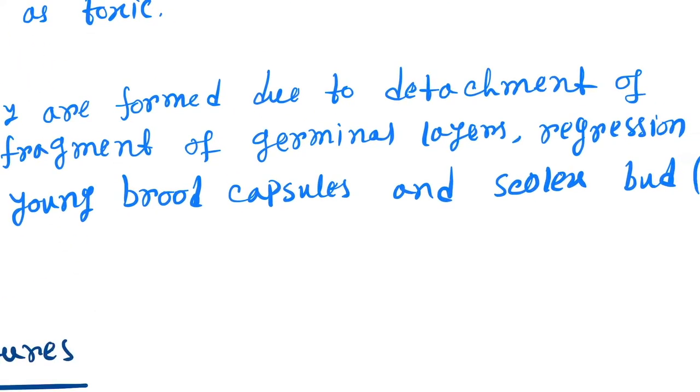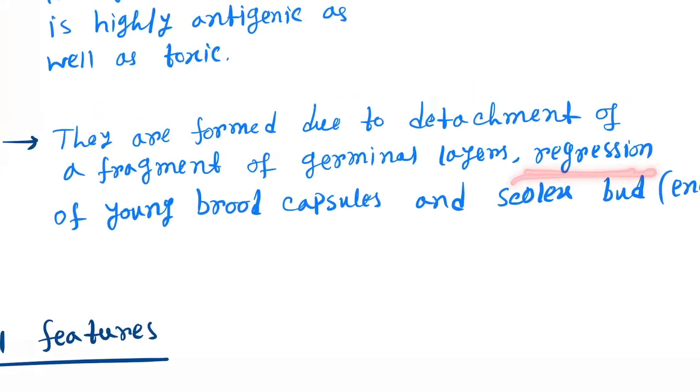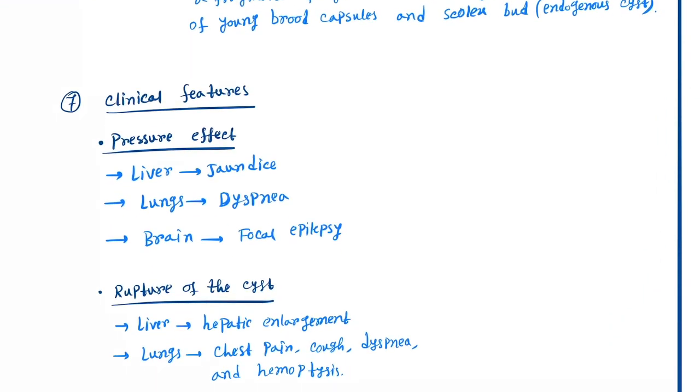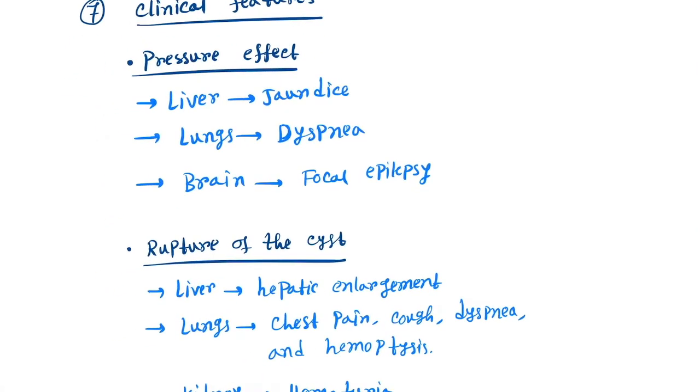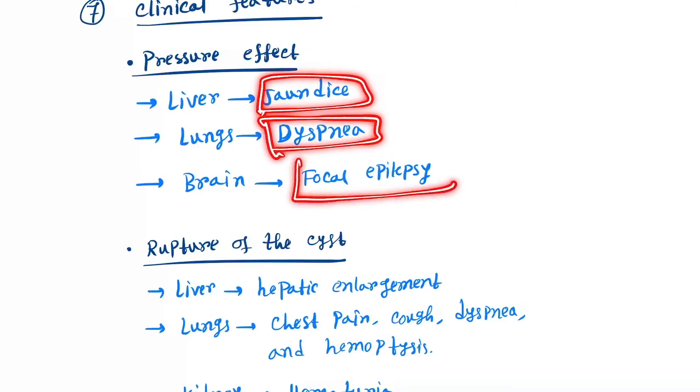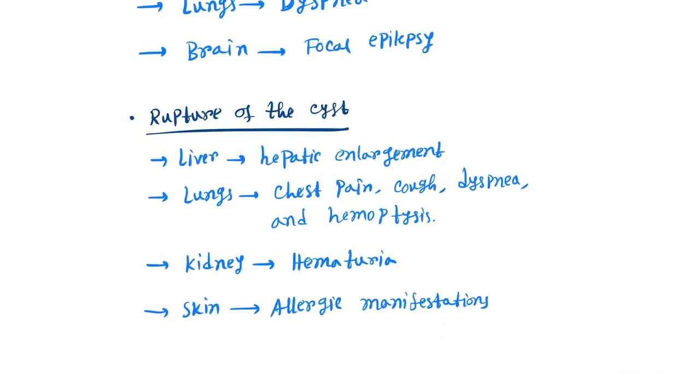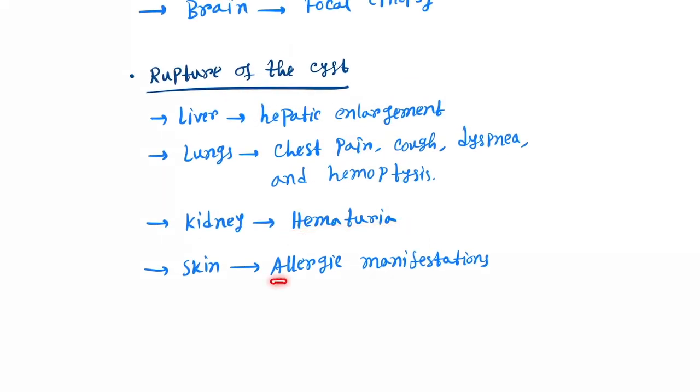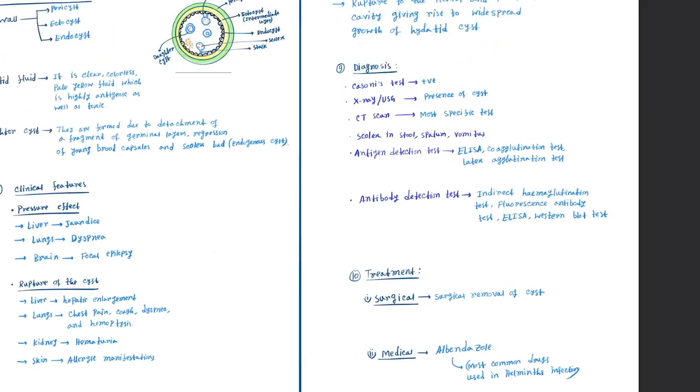Next is clinical features. Clinical features occur basically by pressure effects and rupture of the cyst. Due to pressure effect: in liver you can see jaundice, lungs you can see dyspnea, and brain you can see focal epilepsy. Rupture of the cyst: in liver you can see hepatic enlargement, lungs you can see chest pain, cough, dyspnea, and hemoptysis, in kidney hematuria, in skin allergic manifestations.